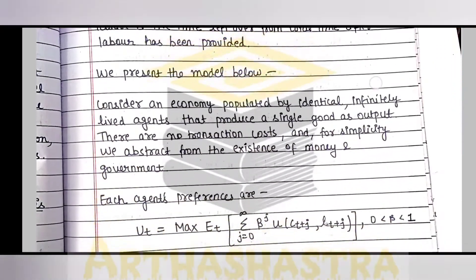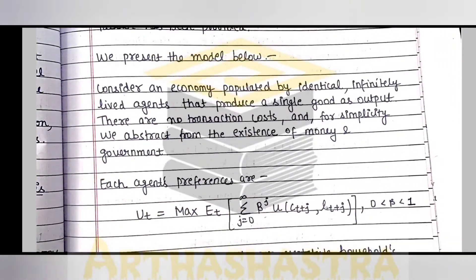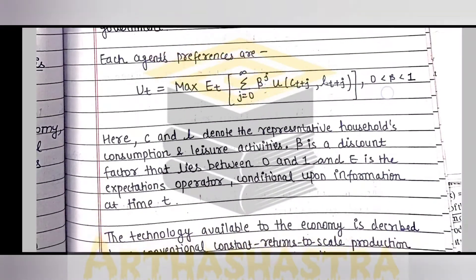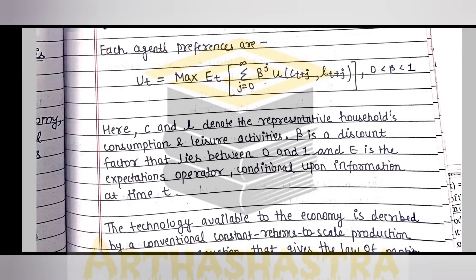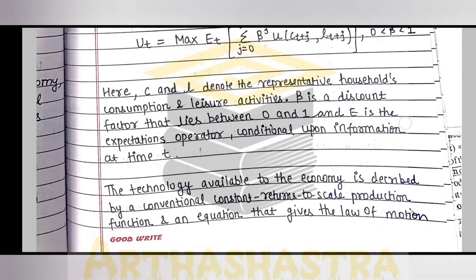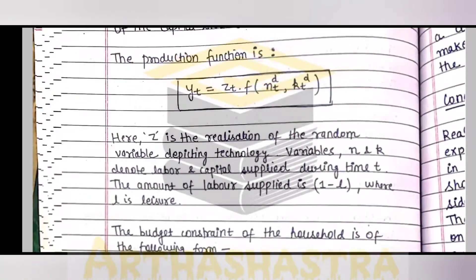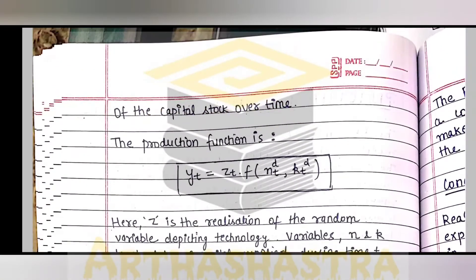Now we are formulating the prototype Real Business Cycle model, which is an extension of another model. We represent the model — it is a utility maximization model. We are using various notations, so we have explained the notations used. It's all complete theory and you have to write it the way it is; you cannot make any change to it. Now we have written down the production function.